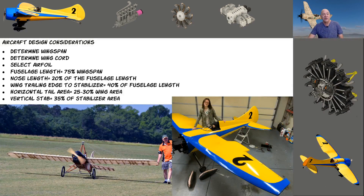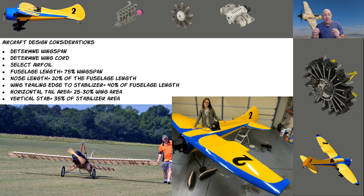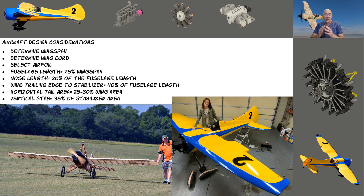Essentially, if you look at some basic stuff you can find on the internet: you pick a wingspan — maybe to fit in your back seat, trailer, or trunk. You've got a wing chord for the design, and an airfoil for the performance you want. Normally the fuselage is 75% of the wingspan. The nose length is normally 20% of that fuselage length. The tail length is normally 40% from the trailing edge of the wing to the leading edge of the horizontal stabilizer. The horizontal stabilizer area is normally 25 to 30% of the wing, and the vertical stabilizer is normally 35% of the horizontal stabilizer.